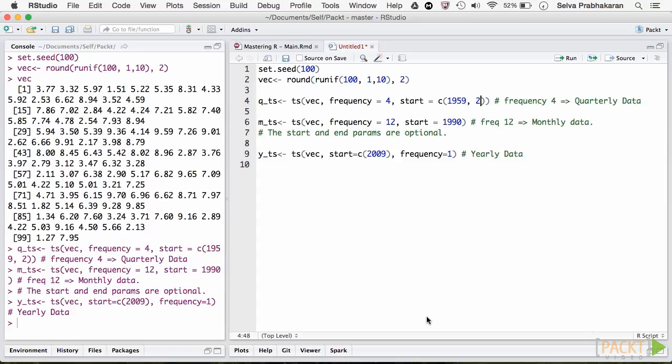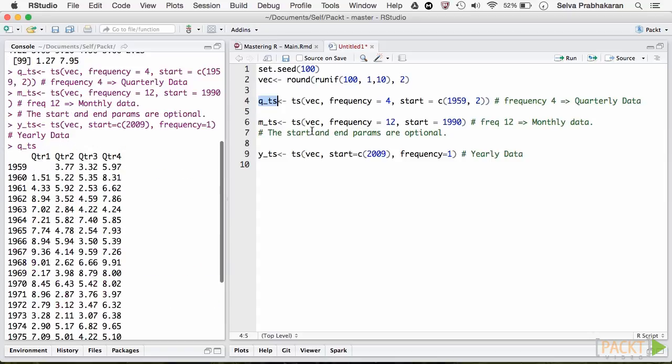When frequency is 4, it will be quarterly time series. When it is 12, it becomes a monthly time series.